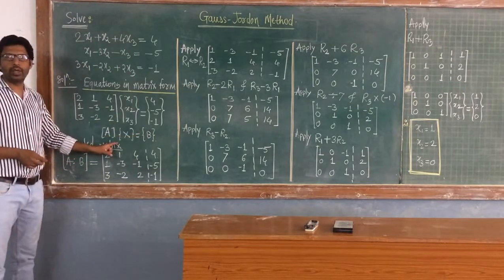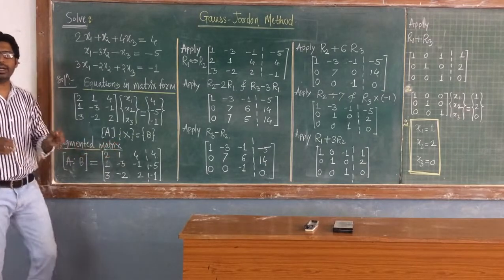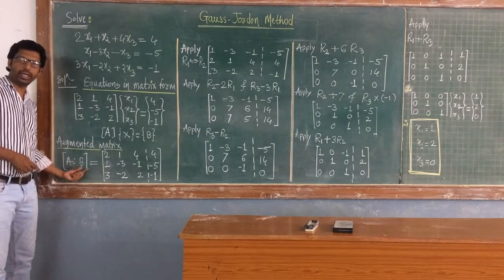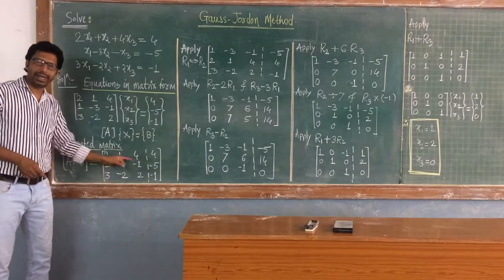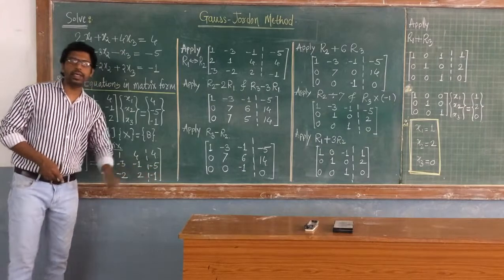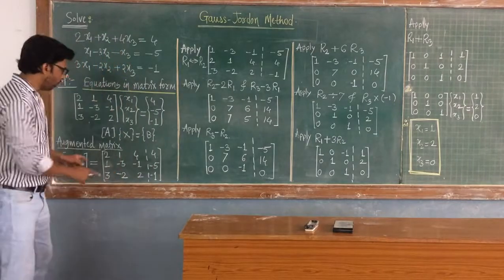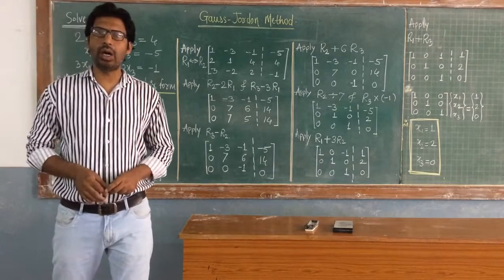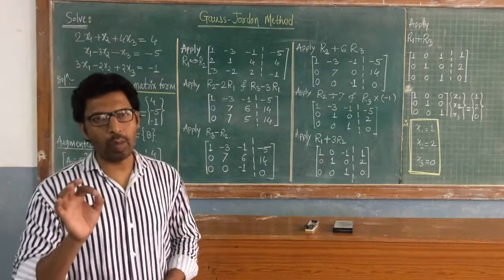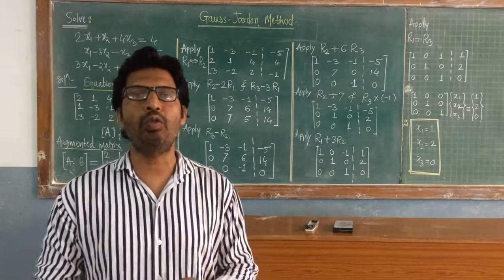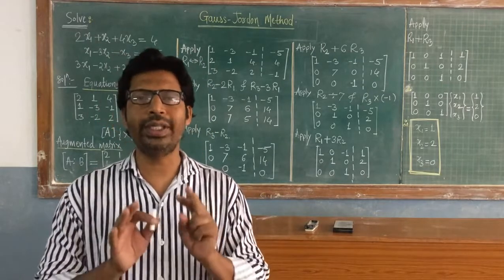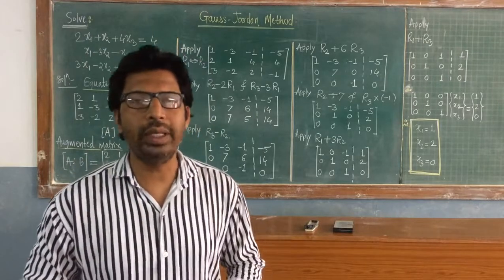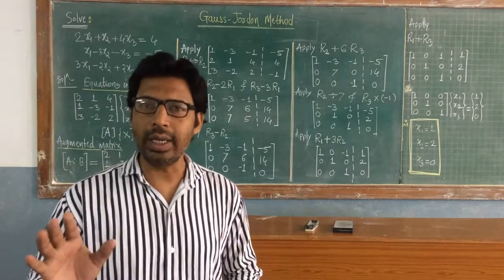The second step is to write down the augmented matrix. The augmented matrix is a combination of matrix A and matrix B — that is A:B. Matrix B forms the fourth column of the augmented matrix. Now we have to perform either row operations or column operations. We can perform only one type at a time — we cannot perform both row and column operations together. Here we will go for row operations only. Our aim is to convert matrix A into normal form, that is diagonal elements equal to 1 and all remaining elements equal to 0.